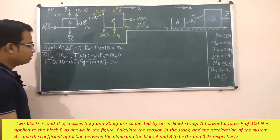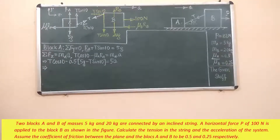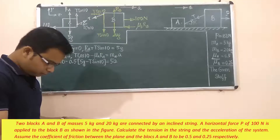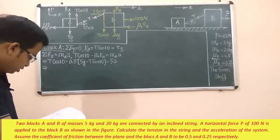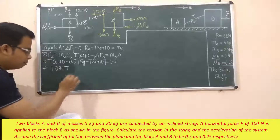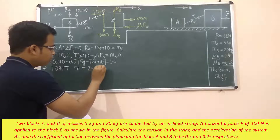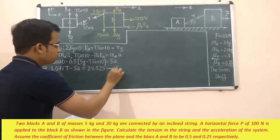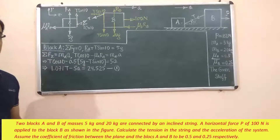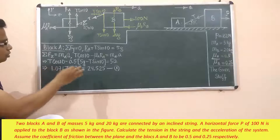Putting in g = 9.81 and simplifying, the equation becomes: 1.071T − 5a = 24.525. Let's call this Equation 1. We need one more equation in terms of T and a, so let's now carry out the motion analysis for block B.